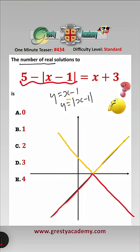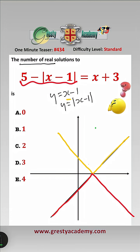So y equals 5 minus mod x minus 1. Let's change the colour again. We'll basically just shift it up by 5. So it will be equal to that, where this here is the 0, 5. So that is y equals 5 minus mod x minus 1.